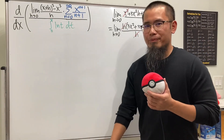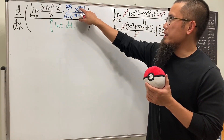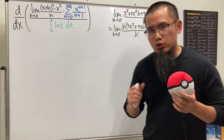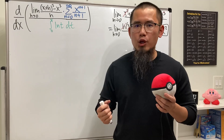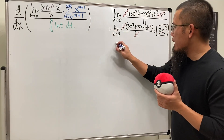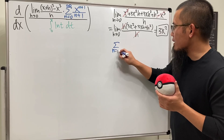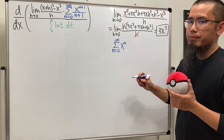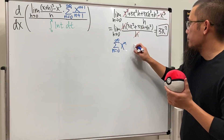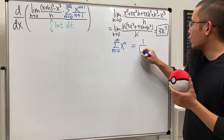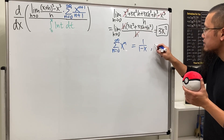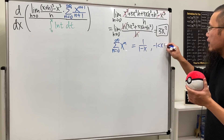Now for the series part — notice the power is n+1 and the denominator is also n+1, which should remind you of the result after integrating x to the nth power. The series as n goes from 0 to infinity of xⁿ is just the geometric series, equal to 1/(1−x), and this converges when x is between −1 and 1.